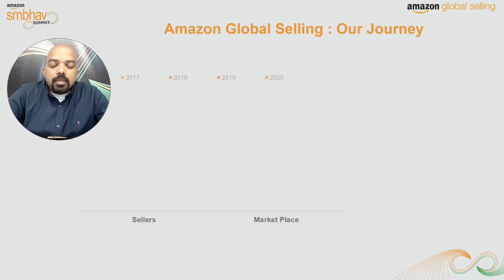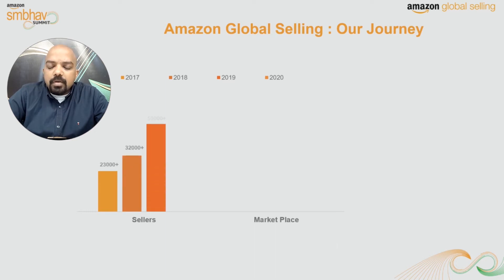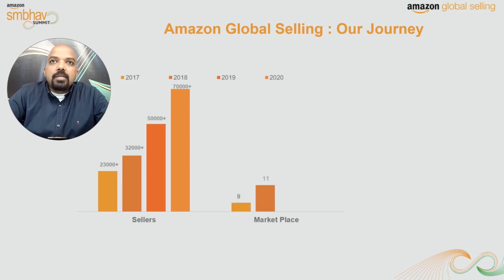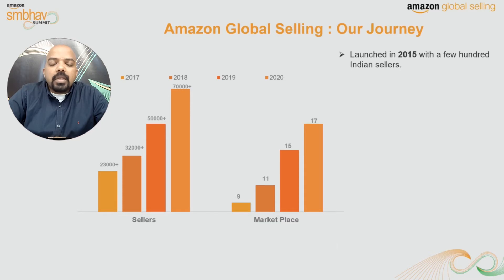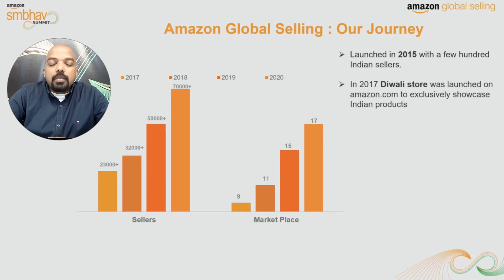If you look at the journey of global selling so far, we started sometime in 2015 with a few hundred sellers, and over the next few years we increased that seller count to 23,000 plus sellers by 2017 — selling across nine marketplaces all over the world. Looking at the graph on your screen, you can see the growth journey we have had till 2020. In 2020 we exited with more than 70,000 sellers selling across 17 marketplaces around the world.